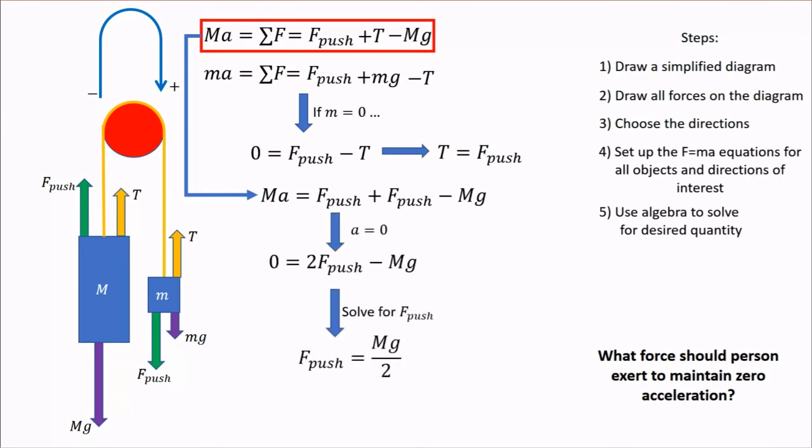Next, we just solve for F push, and we find that F push equals the person's weight, divided by 2. That's pretty cool if you think about it. This contraption allows a person to hold himself up, or lift himself up, by applying half the force that would normally be necessary to do so.